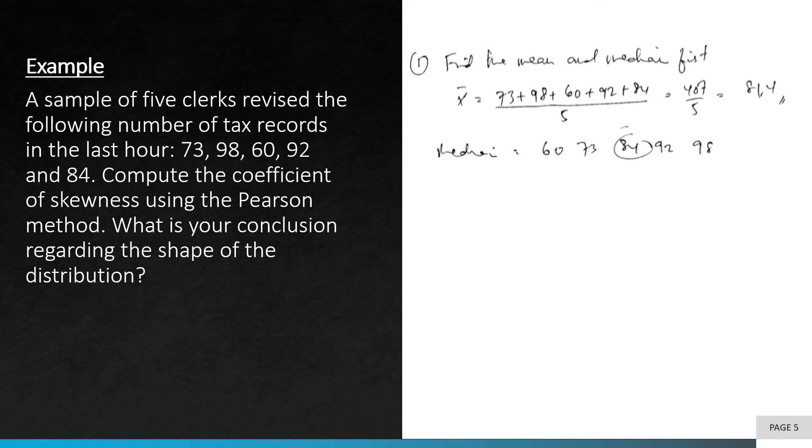To find the median, we simply rearrange the values given from the smallest to the biggest number or the biggest to the smallest number. Median stands for the middle value, so the middle value here is 84.